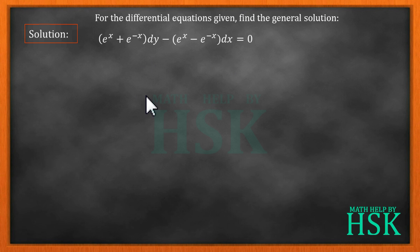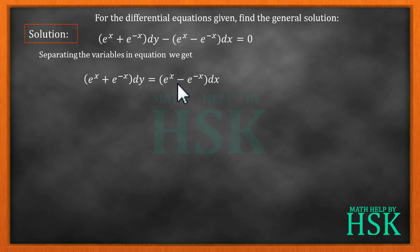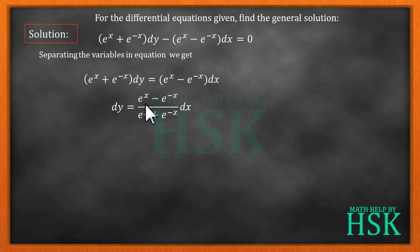Firstly, we see that the differential equation is in the variable separable form. So we take (eˣ + e⁻ˣ) dy on one side and (eˣ − e⁻ˣ) dx on the other side. On cross multiplication, we can write dy is equal to (eˣ − e⁻ˣ) upon (eˣ + e⁻ˣ) into dx.